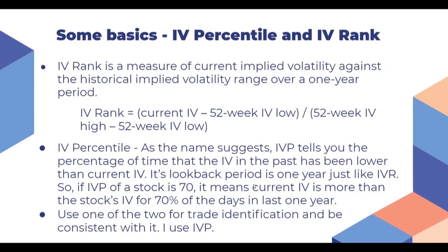Next, IV percentile and IV rank. IV rank is a measure of current implied volatility against the historical implied volatility range over a one-year period. The formula is: IV rank = (current IV minus 52-week low) divided by (52-week high IV minus 52-week low). Higher IV rank means current IVs are higher; lower IV rank means current IVs are lower.